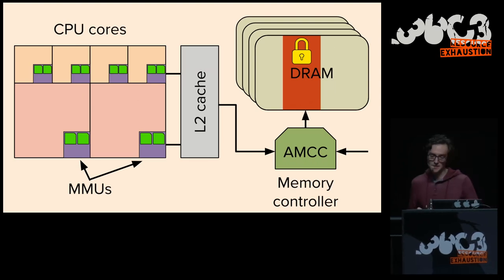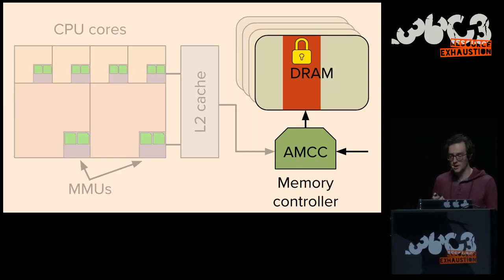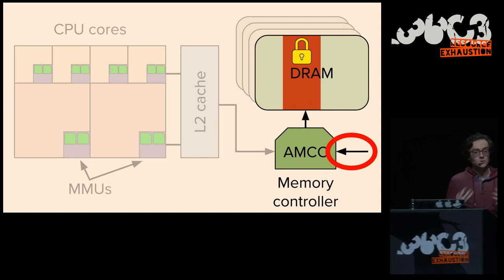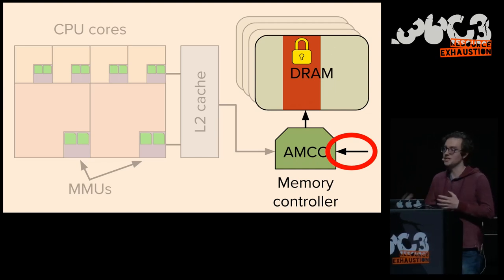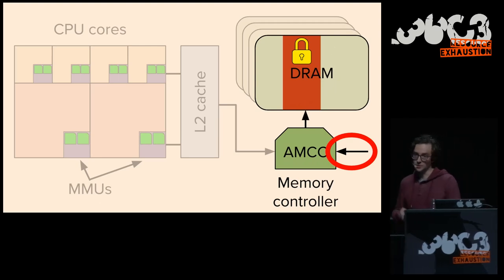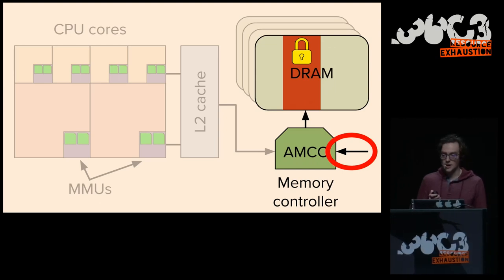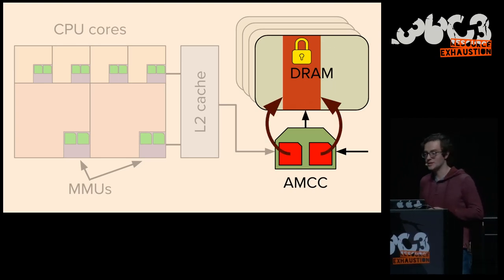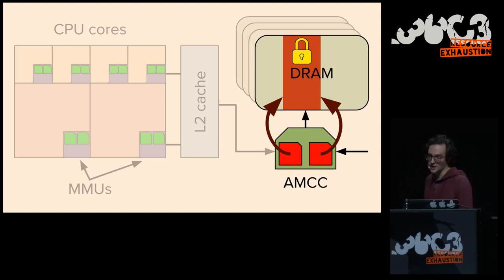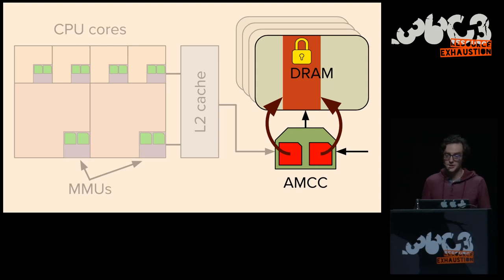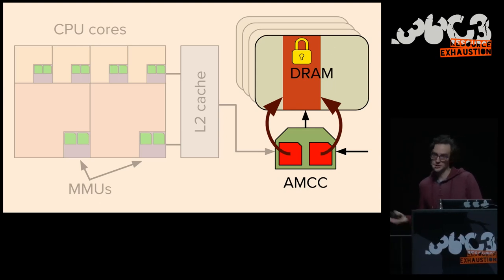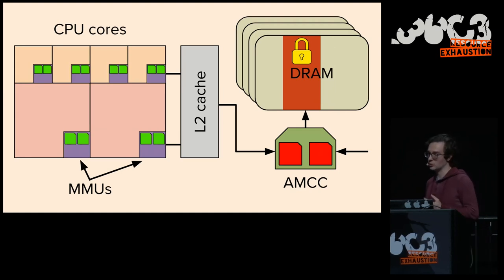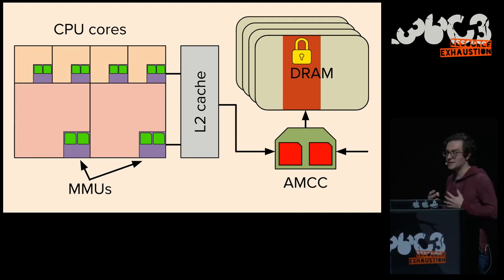This is not the complete picture of everything we need to know to protect this region of memory. There are also separate devices that can connect via controllers to protect against them too. We believe Apple uses AMCC to protect DRAM from devices connected to the system. That is what the system looks like for maintaining KTRR.